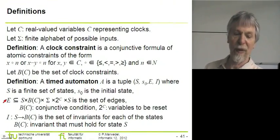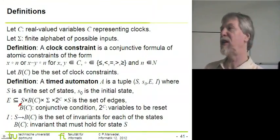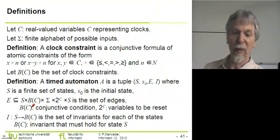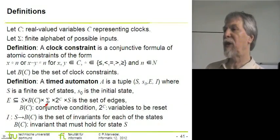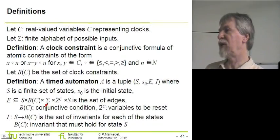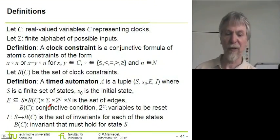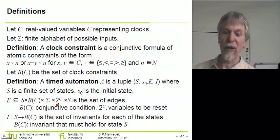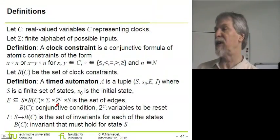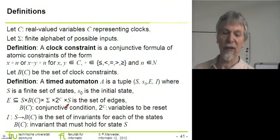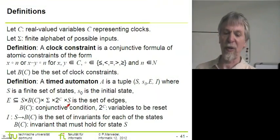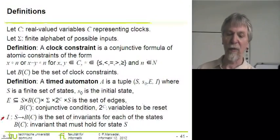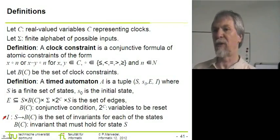For the edges, we know we're starting in a particular state, that's what the S stands for. Then we can have a subset of the set of clock constraints for any edge. We can have one element of the input alphabet, one signal that denotes an input. Then there can be one element from the power set of the clock signals, the set of clocks we're resetting for a particular edge. And this is the terminating edge, the node to which an edge is leading. Then we have I, the set of invariants, the set of constraints we can attach to different states in the system.